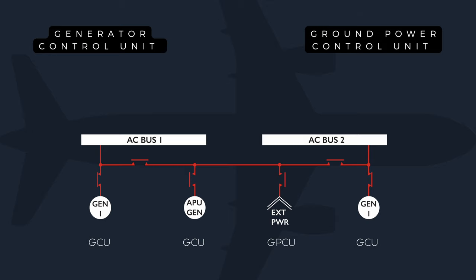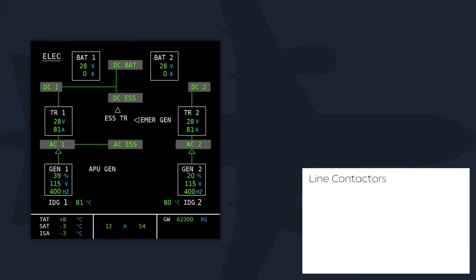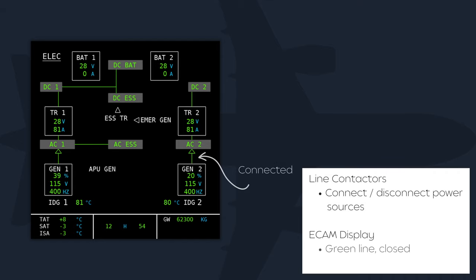Each generator has an associated generator control unit or GCU. The GCU controls the generator voltage and frequency output, controls generator priority, protects the generator and electrical network, and supplies indications and warnings. The GCU controls the connection of the generator to the electrical system via the generator line contactor or GLC. Line contactors connect and disconnect various power sources and are controlled by the GCU. The ECAM ELEC page displays line contactors as green lines when closed; the green line is not displayed when open.